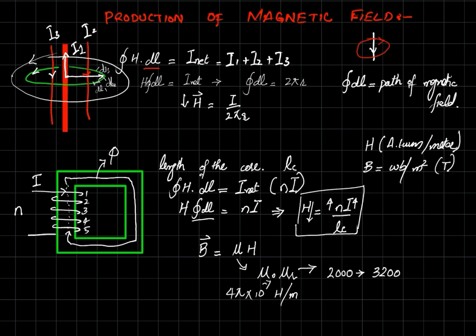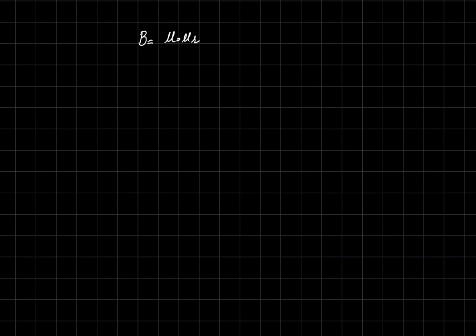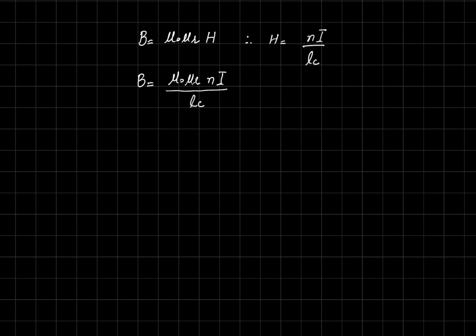With mu-naught equal to 4π × 10⁻⁷ henry per meter as a constant, we get a new equation: B equals mu-naught times mu-r times H. From our previous equations we know H equals NI divided by the length of the core Lc, so this becomes B equals mu-naught times mu-r times NI divided by Lc.